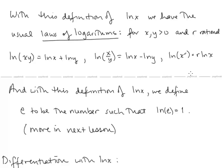With this definition of ln x, we also have the usual laws of logarithms. For x and y positive and r rational: ln(xy) equals ln x plus ln y; ln(x over y) equals ln x minus ln y; and ln of x to the r power equals r ln x. Also, with this definition of ln x, we define e to be the number such that ln e equals 1, and we'll talk more about e and the exponential function in the next lesson.